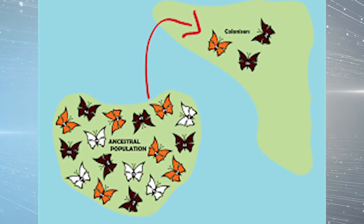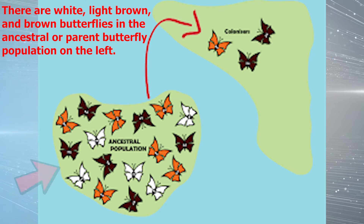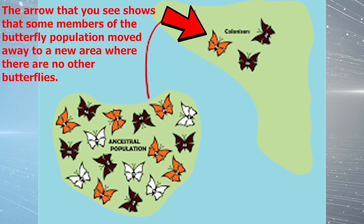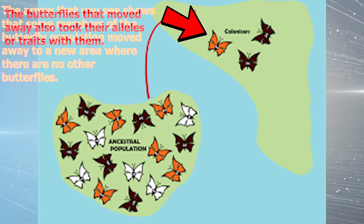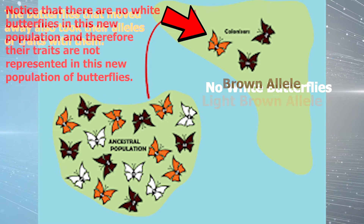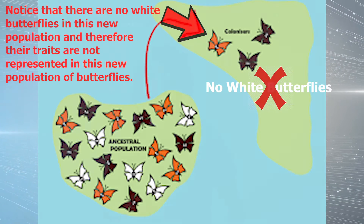Let's take a look at the following example. Notice how there are white, light brown, and brown butterflies in the ancestral or parent butterfly population on the left. The arrow that you see shows that some members of the butterfly population moved away to a new area where there are no other butterflies. The butterflies that moved away also took their alleles or traits with them. But notice that there are no white butterflies in the new population, and therefore their traits are not represented in this new population.